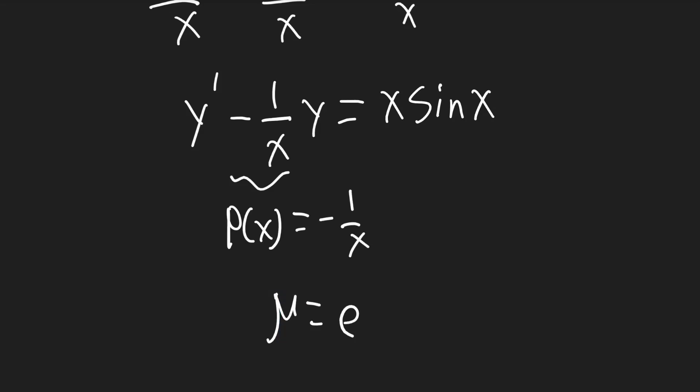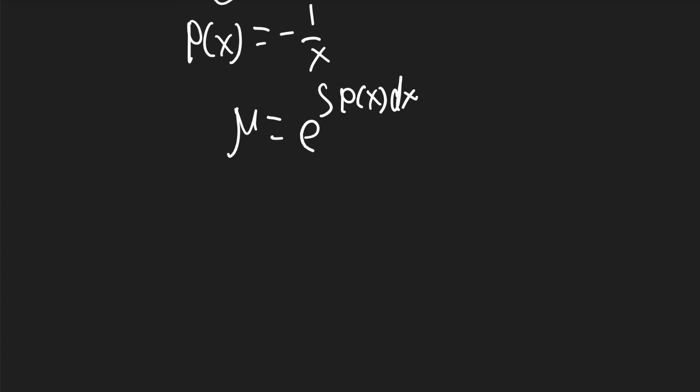So mu is equal to e to the integral of p of x dx. So that's going to be equal to e to the power of negative 1 over x dx, which will be negative ln x to the exponential.